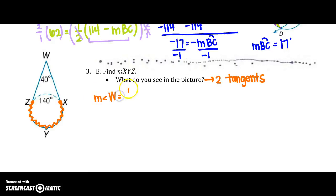So I'm going to take my angle, angle W equals one half of my big arc, the measure of XYZ, big minus my small, minus the measure of XZ.